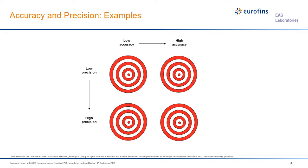Before going further, I want to talk about accuracy and precision — two words often used interchangeably, but here at EAG Laboratories we use them in a very precise way. Accuracy has to do with how correct the measurement is relative to the true value of the material. Precision is whether I get the same number again and again when I repeat the test. Low accuracy and low precision — nobody needs that; it's really more of a guess.